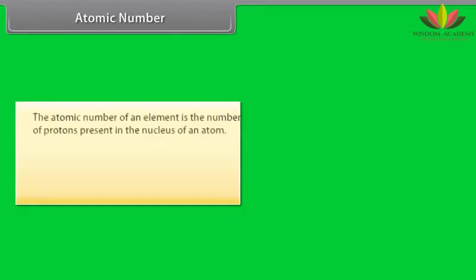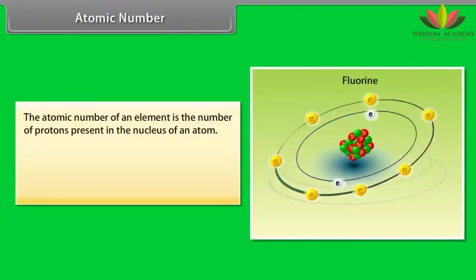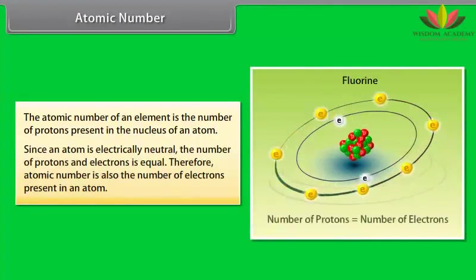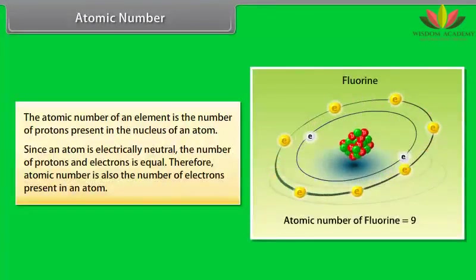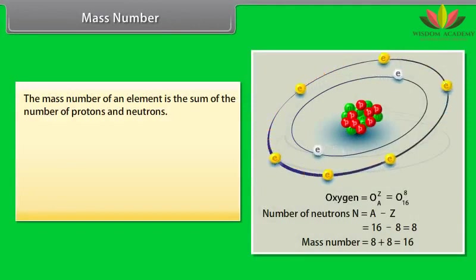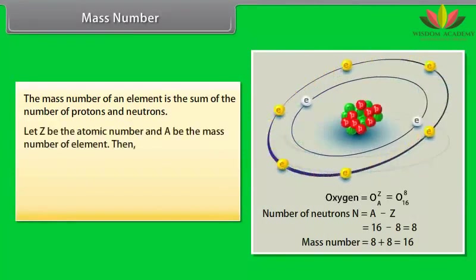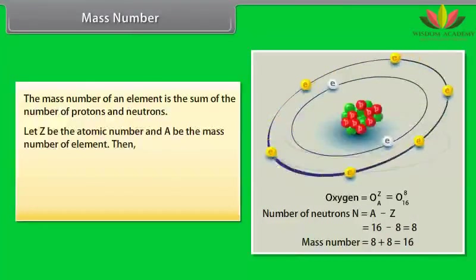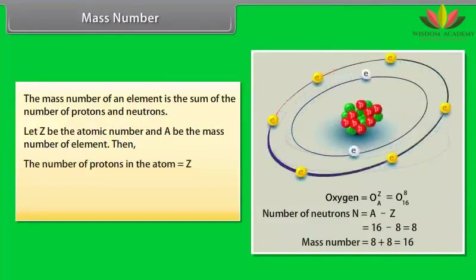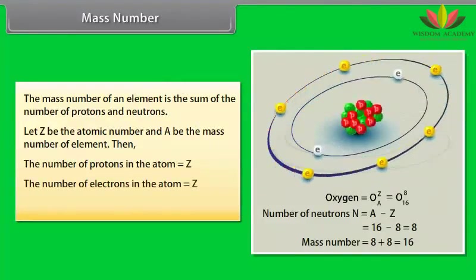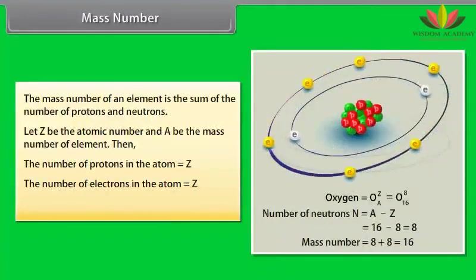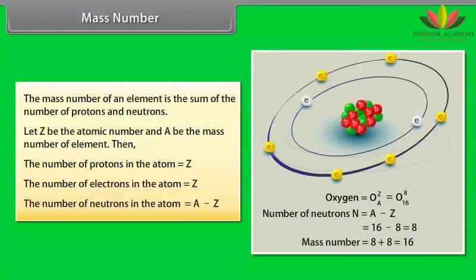Atomic number. The atomic number of an element is the number of protons present in the nucleus of an atom. Since an atom is electrically neutral, the number of protons and electrons is equal. Therefore, atomic number is also the number of electrons present in an atom. Mass number. The mass number of an element is the sum of the number of protons and neutrons. Let Z be the atomic number and A be the mass number of element. Then the number of protons in the atom is equal to Z. The number of electrons in the atom is equal to Z. The number of neutrons in the atom is equal to A minus Z.